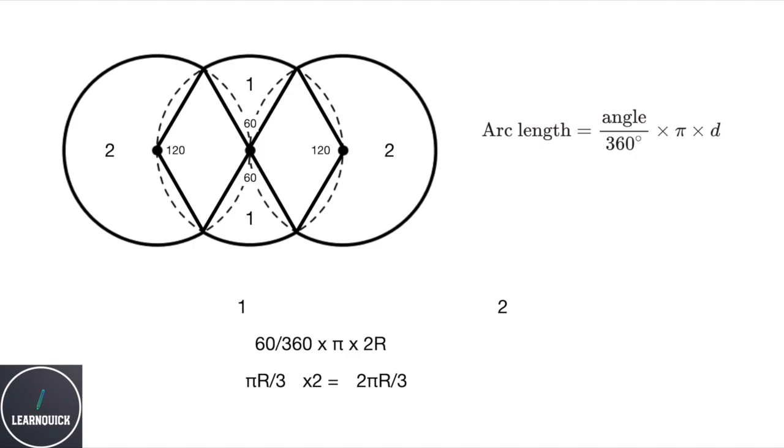Now for shape two, the angle is 240 because we want the outer bit. So it's 360 take away 120, which is the interior angle. So it's 240 over 360 times pi times 2r. Simplifying this, we get 4 pi r over 3, multiply by 2 because there's two of them, and we get 8 pi r over 3.